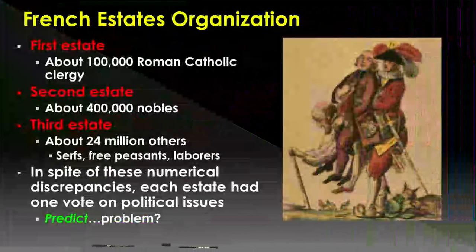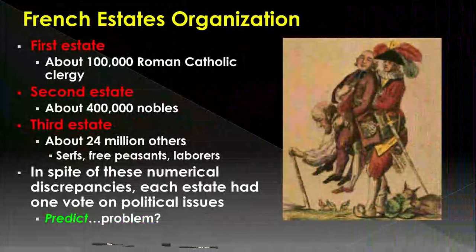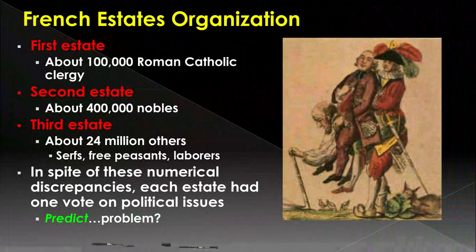Here's where you see why people get upset. The First Estate, or upper class, is mostly made up of church people with about 100,000 people. The Second Estate, or middle class, has about 400,000 people — they're the nobles, what would be rich people in our current terms, along with landowners. Then the Third Estate is literally everyone else: all the laborers, farmers, blacksmiths and people that make things — and there are 24 million of them.